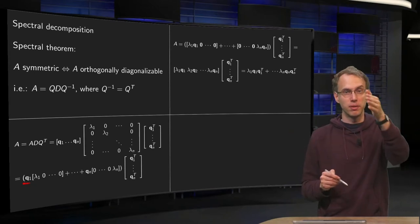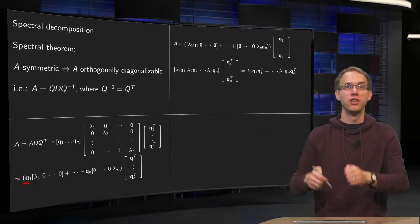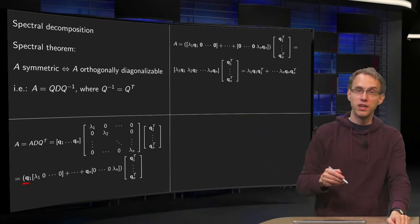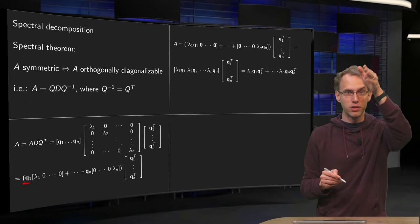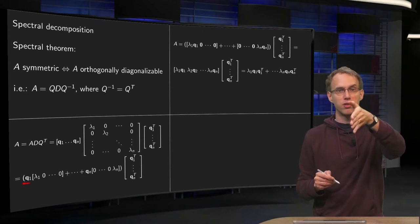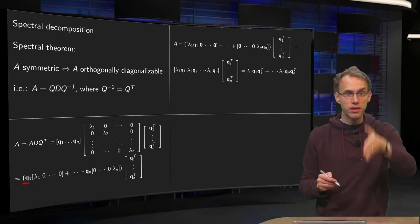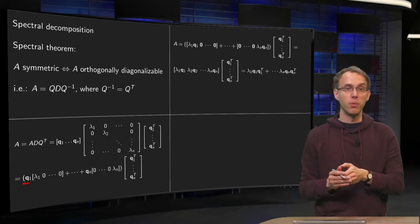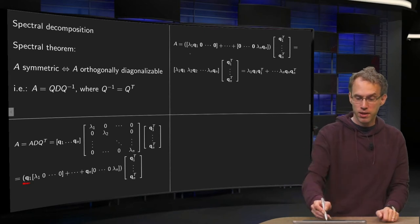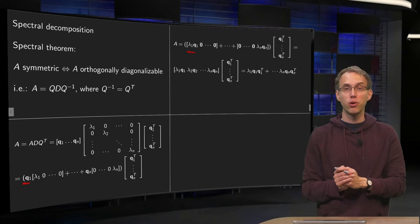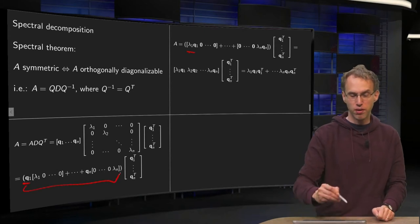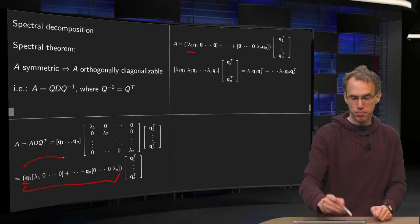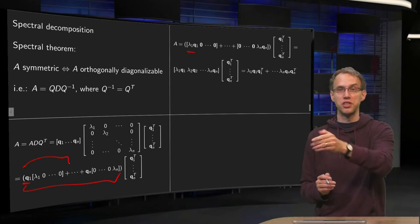The second component of Q1 times lambda 1 plus all zeros. And then third component of Q1 times lambda 1 and then all the others are zeros. So what we end up with is lambda 1 times the first component, lambda 1 times the second component of Q1 and so on until lambda 1 times the last component. So that will be our first column of our product matrix. And all the others are zeros.